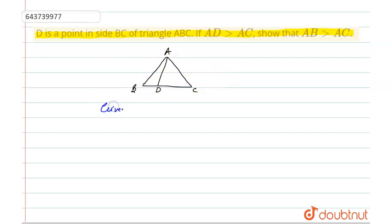Everyone knows AD is greater than AC. So if AD is greater than AC, then we have one simple rule that angle opposite to the greater side is also bigger. Therefore, angle ACD should be greater than